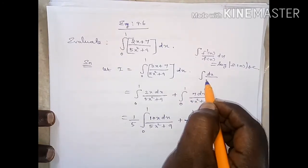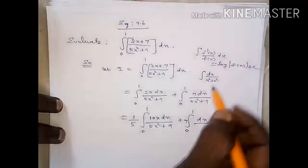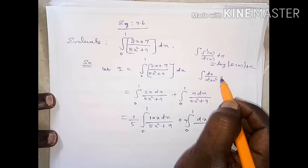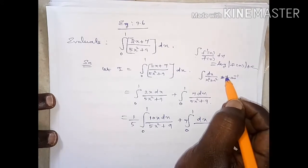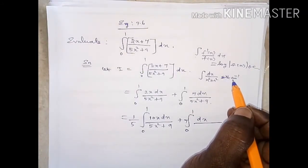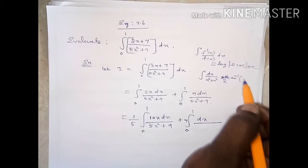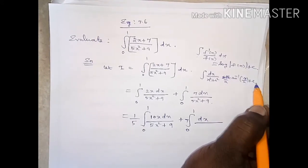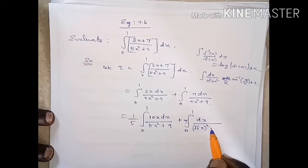For the second integral, we use the formula: integral of dx divided by x squared plus a squared equals 1 by a into tan inverse of x by a plus C. The denominator can be written as (root 5 times x) whole squared plus 3 squared, so a equals 3 and we apply the formula method.